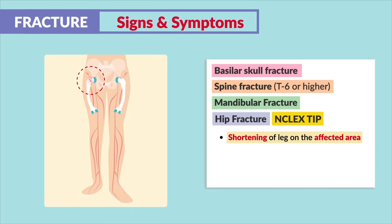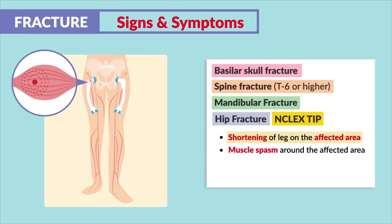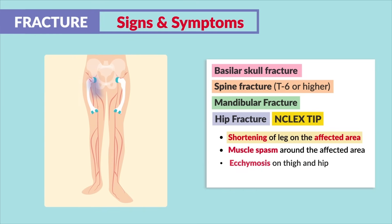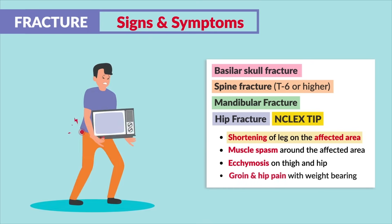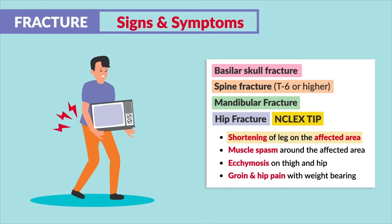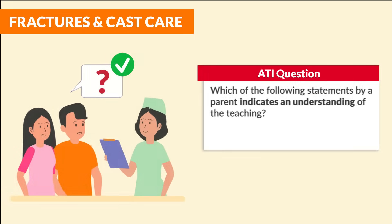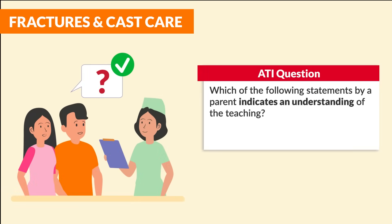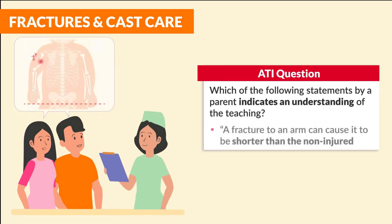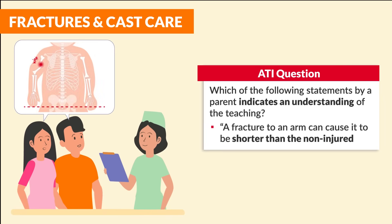For hip fractures — big NCLEX tips here — key signs are shortening of the leg on the affected side, caused by muscle spasms around the affected area. We'll see ecchymosis on the thigh and hip, as well as groin and hip pain with weight bearing.